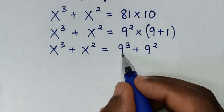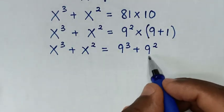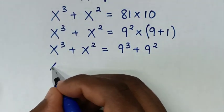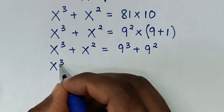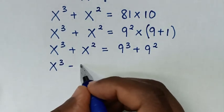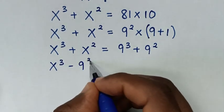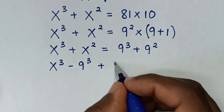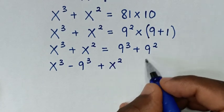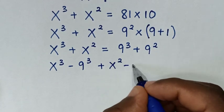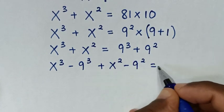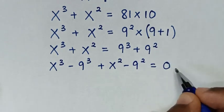Then we take the terms to the left side, so it will be x³ minus 9³ plus x² minus 9² = 0.